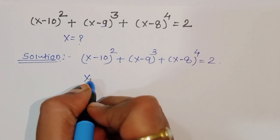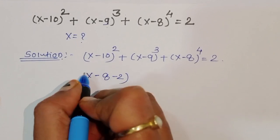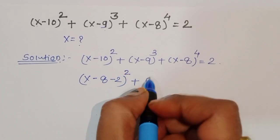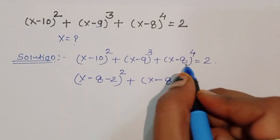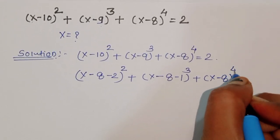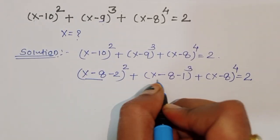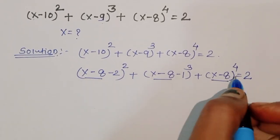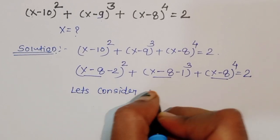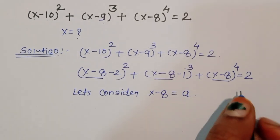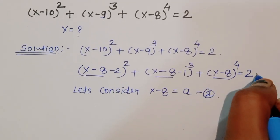We can rewrite the terms by expressing them in terms of (x-8). So x-10 = (x-8) - 2, and x-9 = (x-8) - 1. We can see that (x-8) is common throughout. So let's consider x-8 = a. This is equation 2, which we will substitute into equation 1.